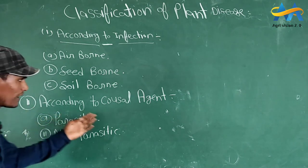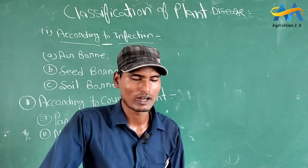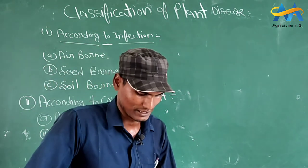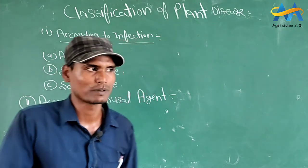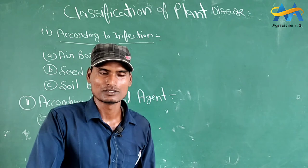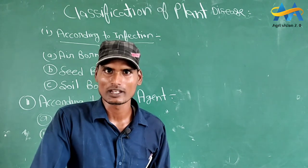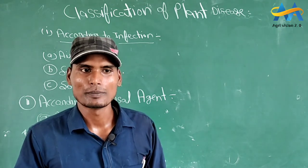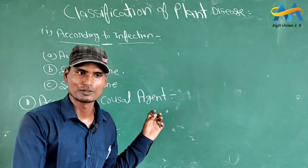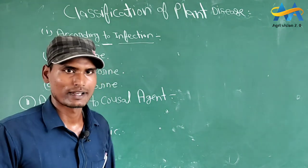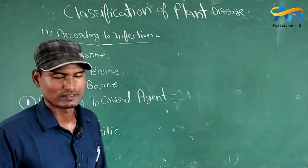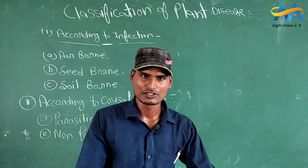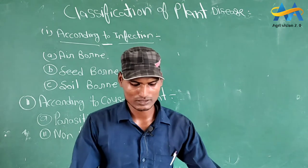Next classification is according to causal agent. Causal agent के आधार पर plant disease को दो भागों में categorize किया गया है। पहला है parasitic - जब किसी disease की development होती है तो उसके लिए एक living microorganism की जरूरत होती है, जैसे virus या कोई भी parasite। Next है non-parasitic, जिसके अंतर्गत किसी भी pathogen या virus का होना जरूरी नहीं है।